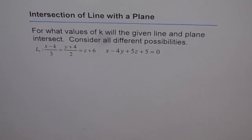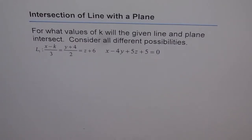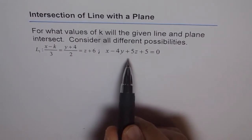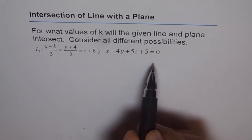Intersection of a line with a plane. For what value of k will the given line and plane intersect? Find all different possibilities. We are given a line: (x − k)/3 = (y + 4)/2 = z + 6, and the equation of the plane: x − 4y + 5z + 5 = 0.